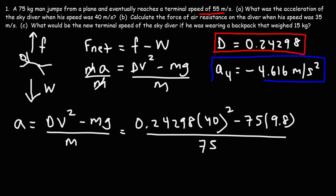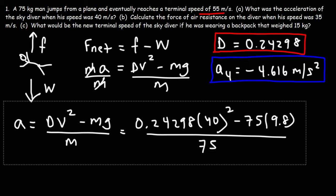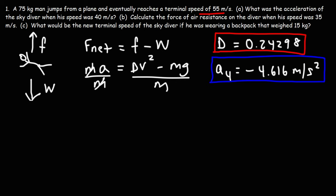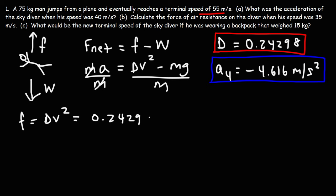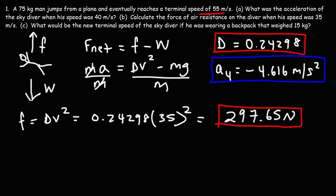So that's how you calculate the acceleration at a certain speed — you first need to find the proportionality constant D. For part B: calculate the force of air resistance when the speed was 35 meters per second. The force of air resistance is simply Dv², so it's 0.24298 times 35 squared, which gives 297.65 newtons.